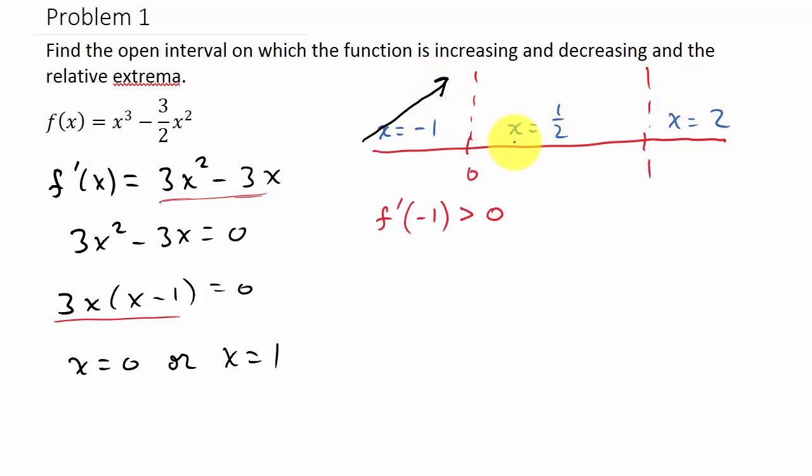Now I'm going to do the same thing with x = 1/2. So f'(1/2). And again, I'm going to take the 1/2, plug it into here. So 3 times 1/2, that's positive. 1/2 - 1 is negative. So a positive times a negative is negative, so this is less than zero. So in this interval from zero to one, our function is decreasing.